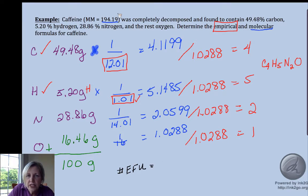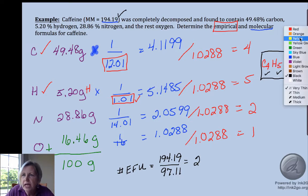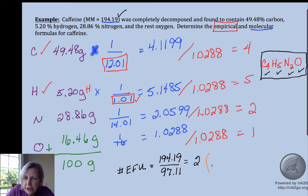So to get the molecular formula, we want to find the number of those empirical formula units that will fit in the big molecule. So the question says the whole molecule is 194.19. If I take 4 carbons, 5 hydrogens, 2 nitrogens, and an oxygen, I get an empirical formula mass of 97.11. So I want to figure out how many of these units are in caffeine, and I get 2.